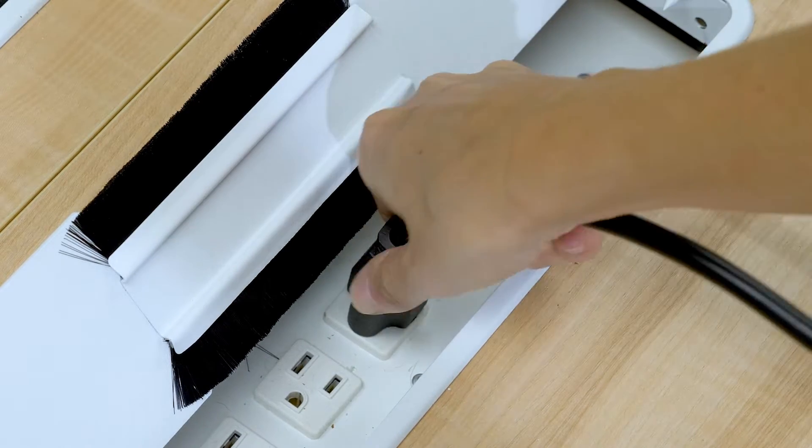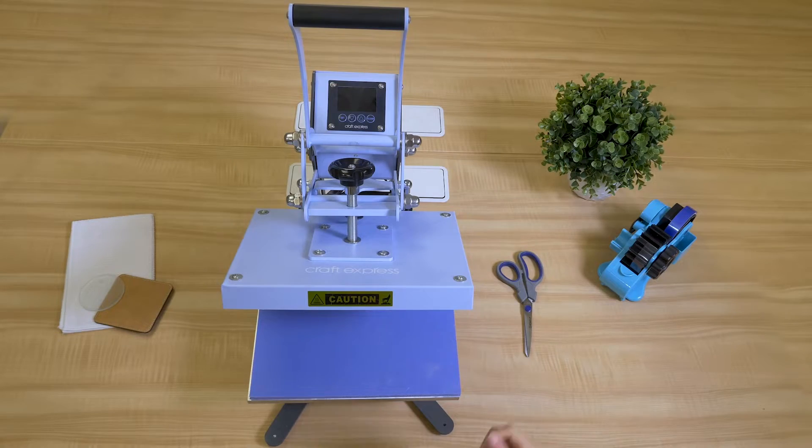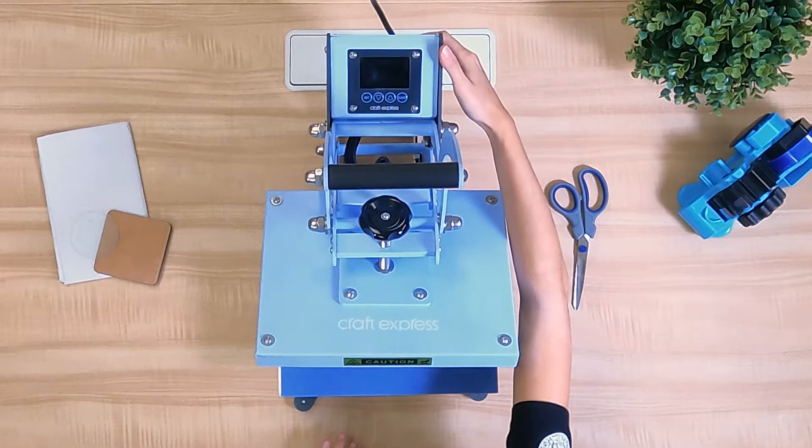Start by plugging in your press. Then, click the switch on the back of your press to turn it on.